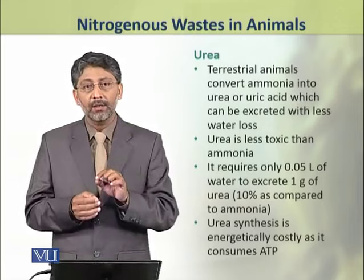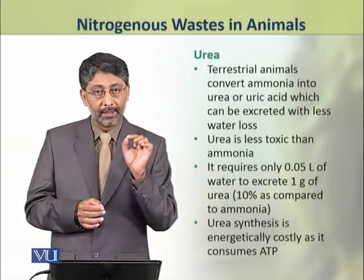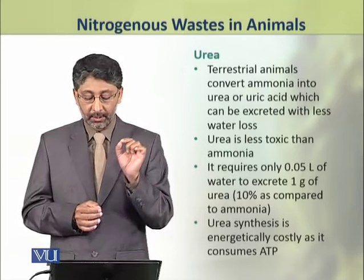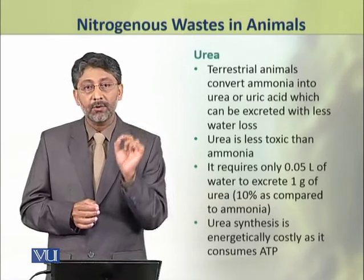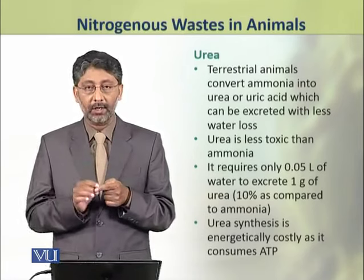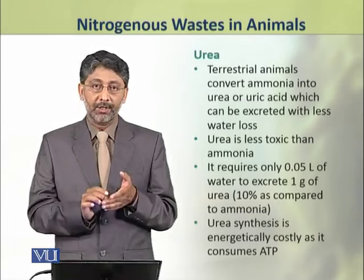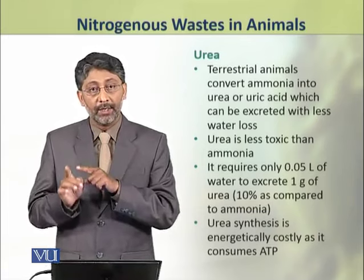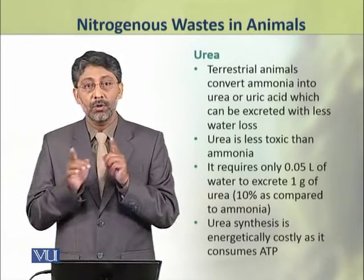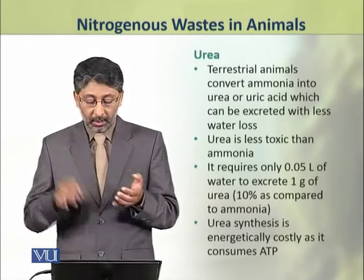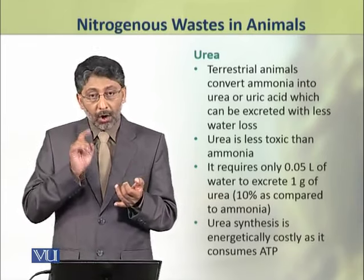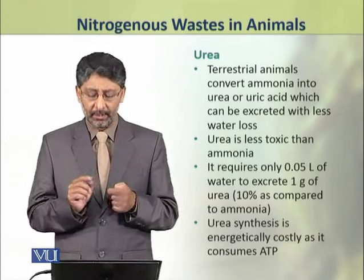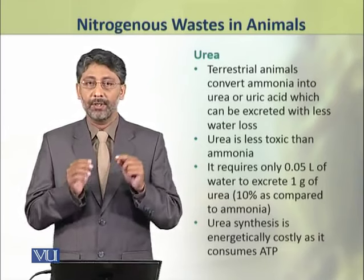Terrestrial animals convert ammonia into urea or uric acid, which can be excreted with less water loss. Urea is less toxic compared to ammonia and requires only 0.05 liter of water for the excretion of 1 gram of urea — that is only 10% of the water required for ammonia. However, urea synthesis is energetically costly as it consumes ATPs.